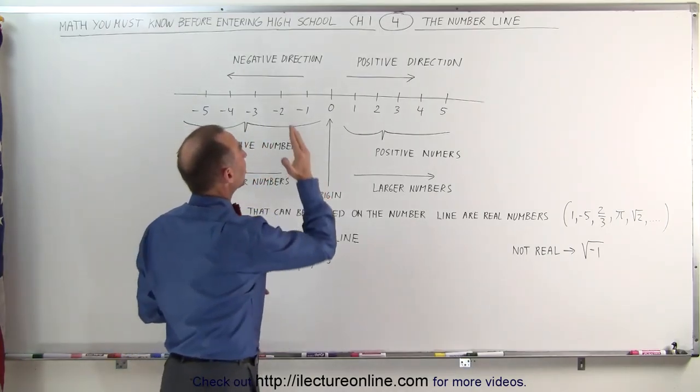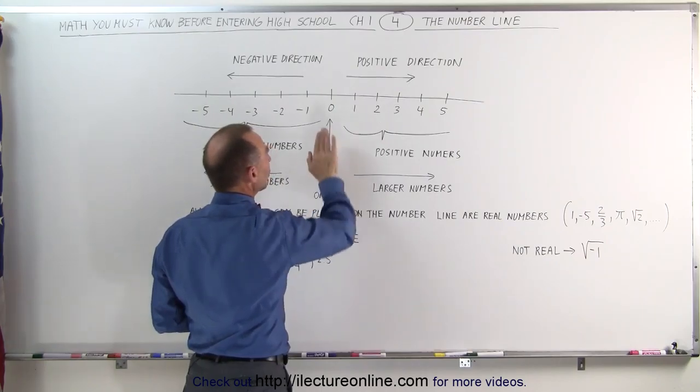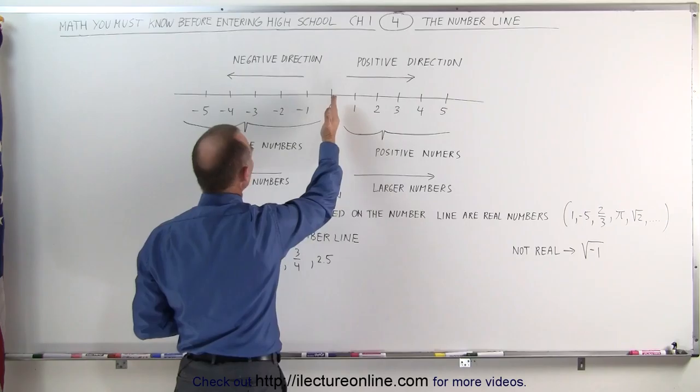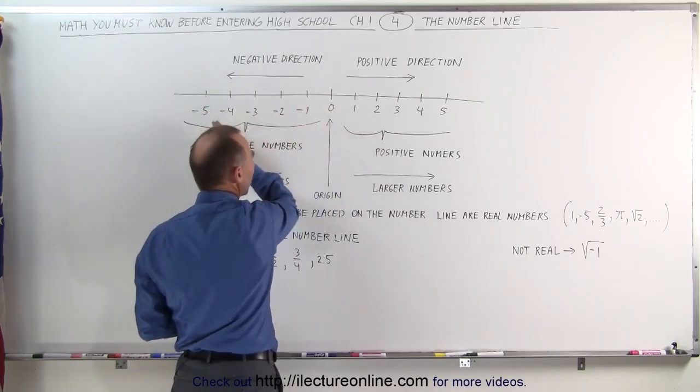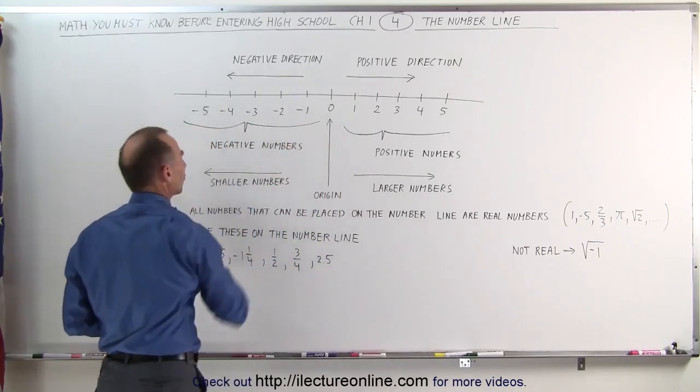Notice that in the middle of the number line we have the number zero. That's called the origin. All the numbers to the right are positive numbers, they're greater than zero. All the numbers to the left are negative numbers, they're smaller than zero. So the positive numbers are to the right, the negative numbers are to the left.